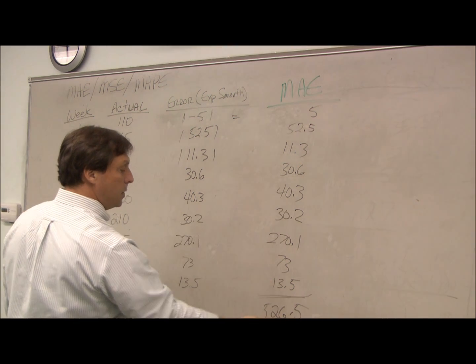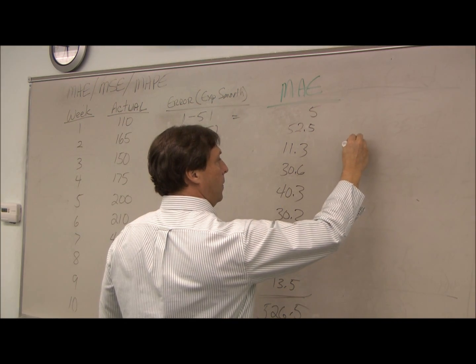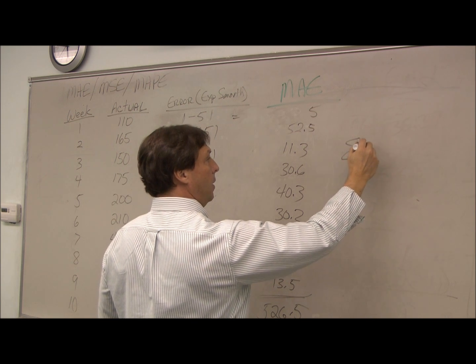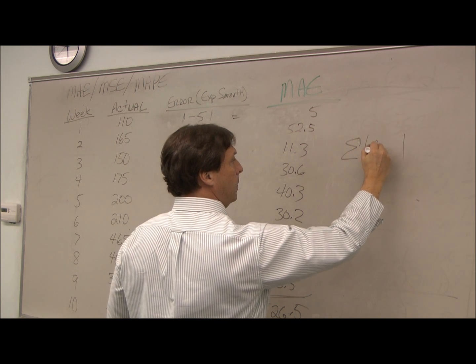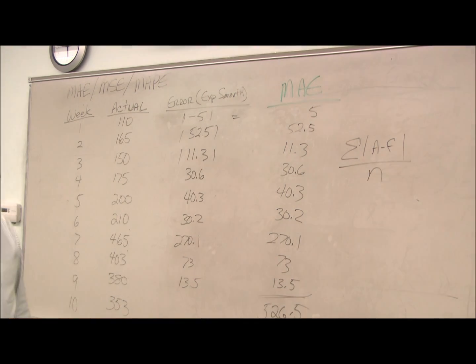Next thing we do is we just sum up. Our formula looks like the summation of our errors, and we divide - we take the average basically.